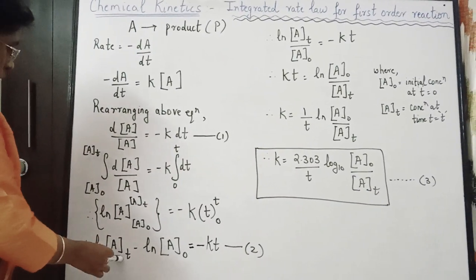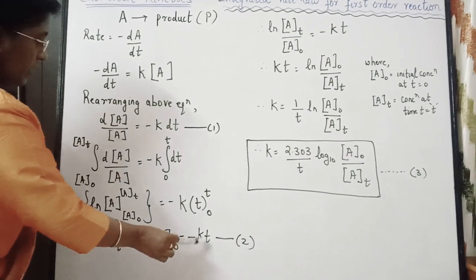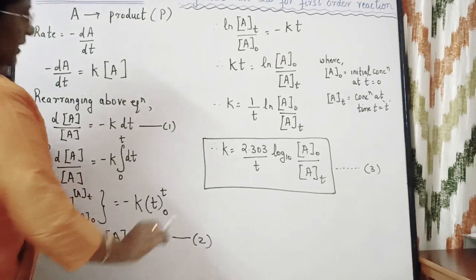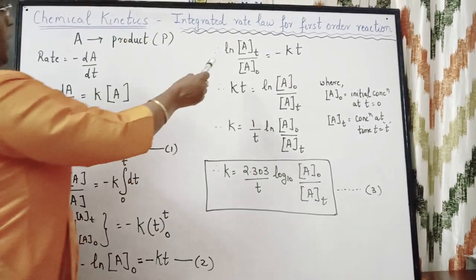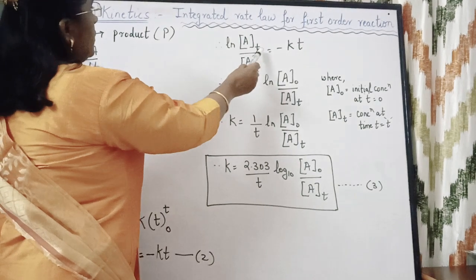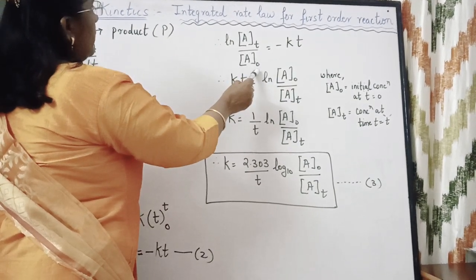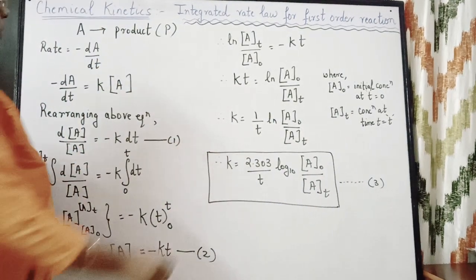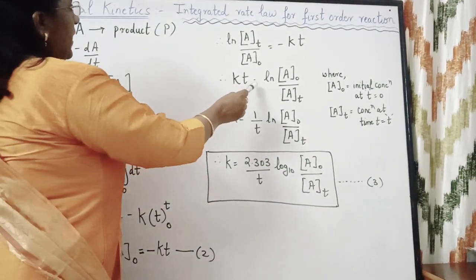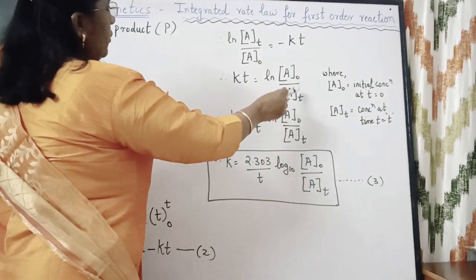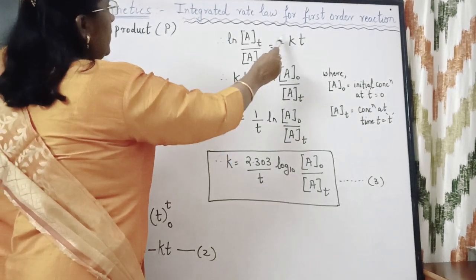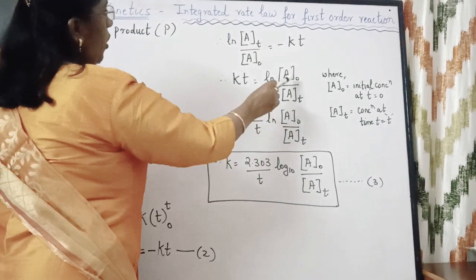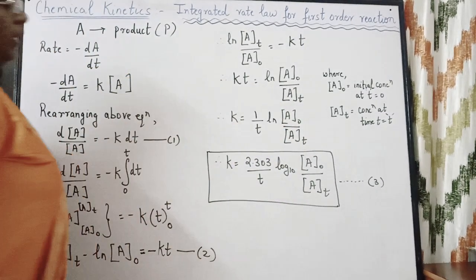Therefore, ln[Aₜ] - ln[A₀] = -Kt. Let this be equation number 2. Therefore, ln([Aₜ]/[A₀]) = -Kt, which gives Kt = ln([A₀]/[Aₜ]) after taking the reciprocal to remove the negative sign.